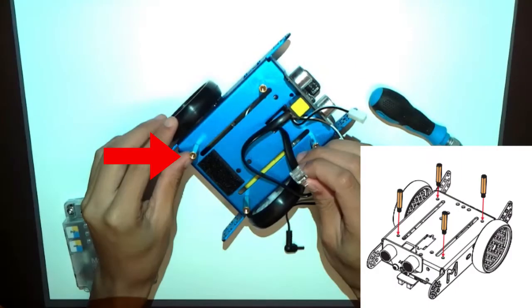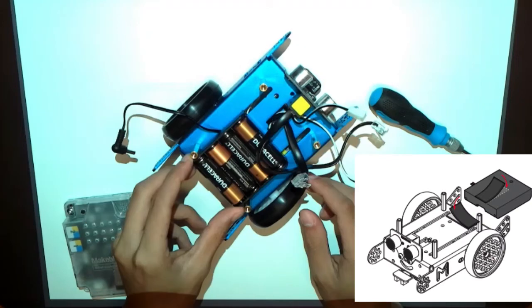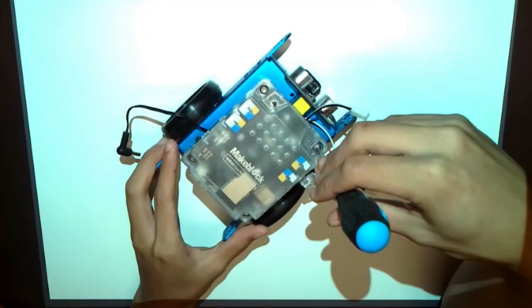Screw in the gold colored standoffs to the top of the car, then attach the battery pack with the velcro seal. Screw in the core using the standoffs.